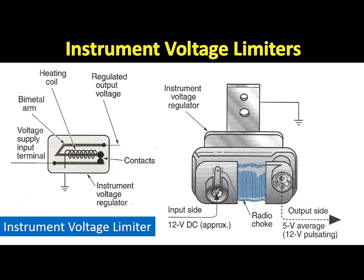When the ignition switch is turned on, voltage is supplied through the limiter contacts to the gauges, and current also flows through the heating coil to ground. The heating coil heats the bimetallic strip very quickly and the limiter contacts open the circuit to both the gauges and the heating coil. The bimetallic strip cools quickly and the contacts close again. The voltage limiter supplies a pulsating five volts to the gauges regardless of the input voltage, providing more stable gauge operation.